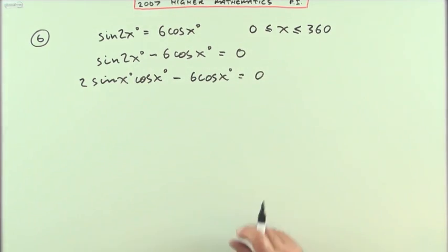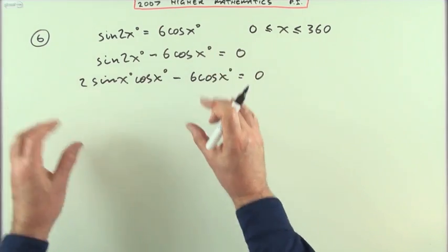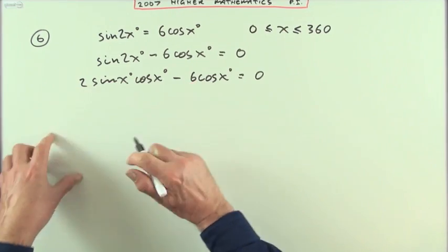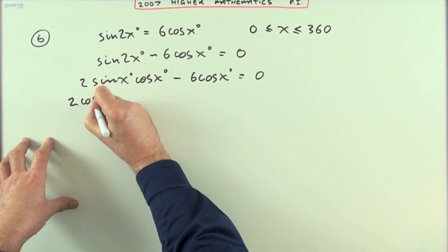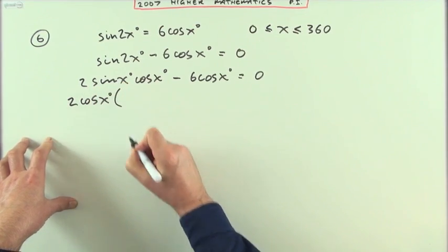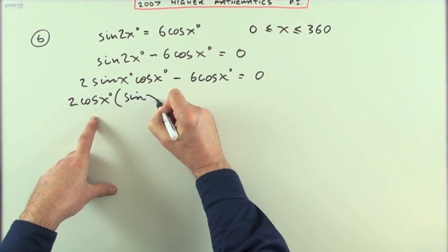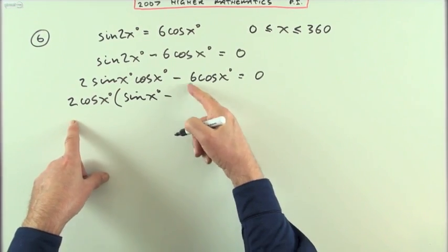Now that you've got everything on one side, the technique is going to be factorize. There's a common factor of two for the numbers and cos(x) for the expressions, leaving me sin(x) minus three.